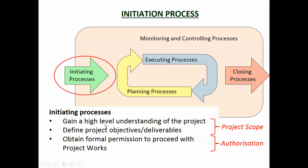Now, high level means that you're not defining it down to the last nut and bolt. You might have some sort of description — if it's a road, say a capacity of 17,000 vehicles per day, pedestrian and cycle access on both sides of the road, and that sort of thing — but a little bit more detail than that.